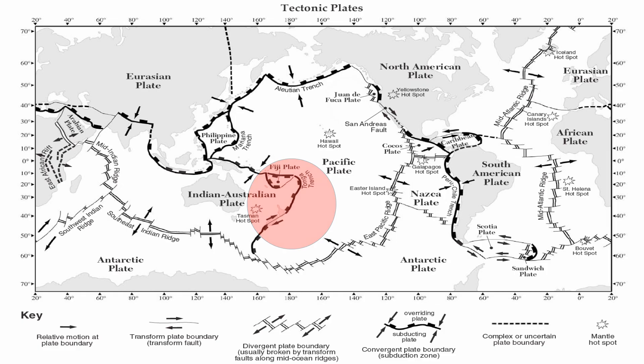We do have some ocean-to-ocean convergence in the Atlantic, where the North American plate, the South American plate, and the Caribbean plate all somewhat interact. Also the South American plate and the Sandwich plate have a little bit of ocean-to-ocean convergence there as well. The third type of convergent plate boundary is continent-to-continent — you get that with the Indian plate crashing into the Eurasian plate, and also with the Arabian plate crashing into the Eurasian plate.